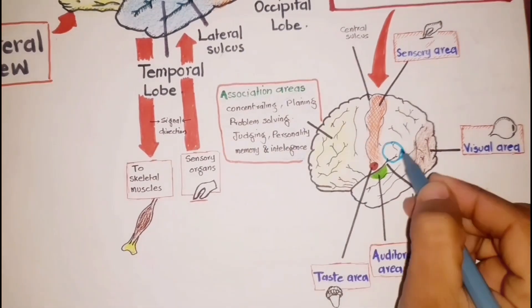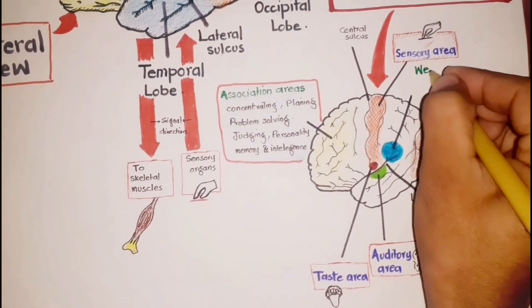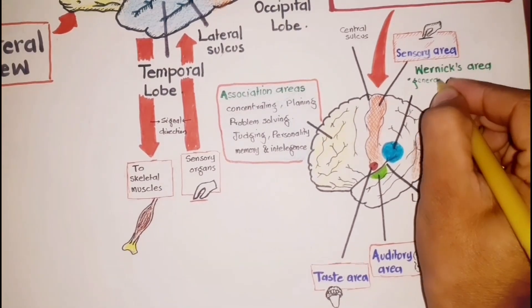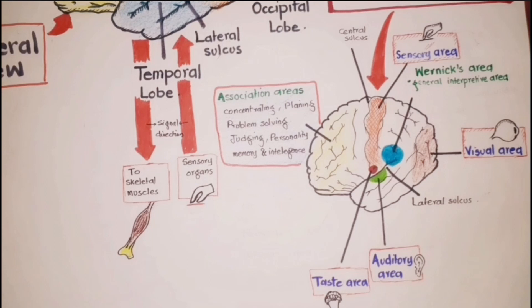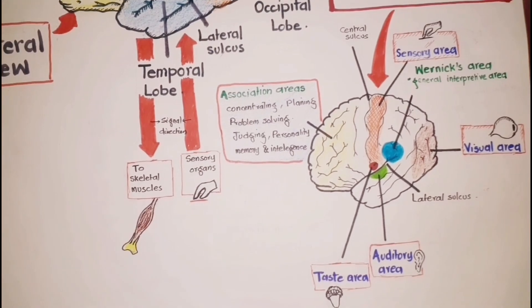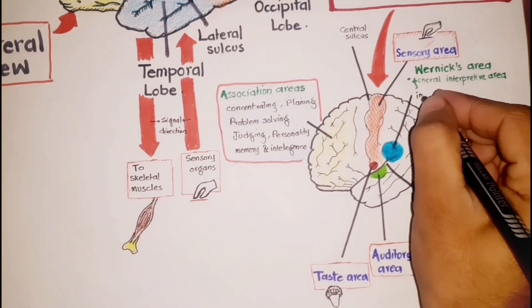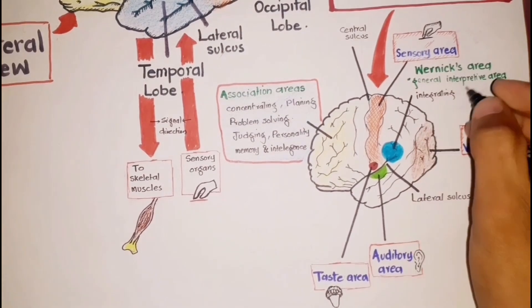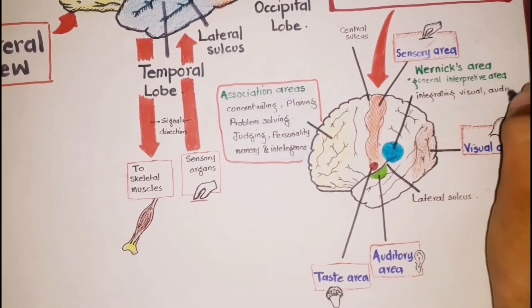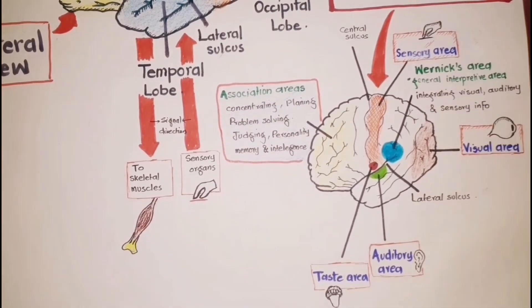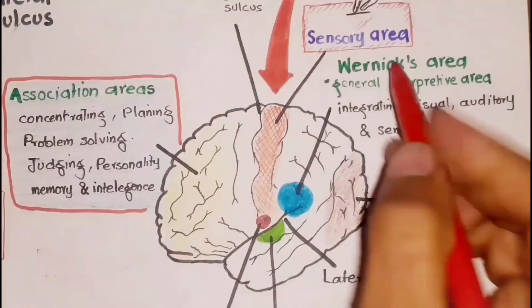This is Wernicke's area that has been referred to as a general interpretive area. It is located near where the occipital, parietal, and temporal lobes meet. It plays a role in integrating visual, auditory, and other sensory information and then interpreting a situation.